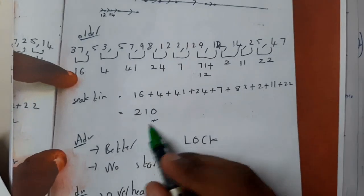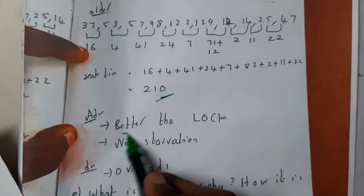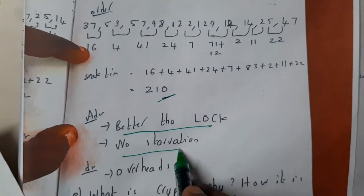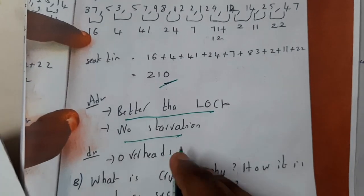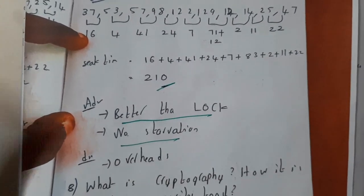In that way you will be calculating the seek time. So we got the seek time as 210, so it is better than LOOK. But here we will not be having any starvation - the starvation will be almost reduced here, but the only problem we will be having is overheads.